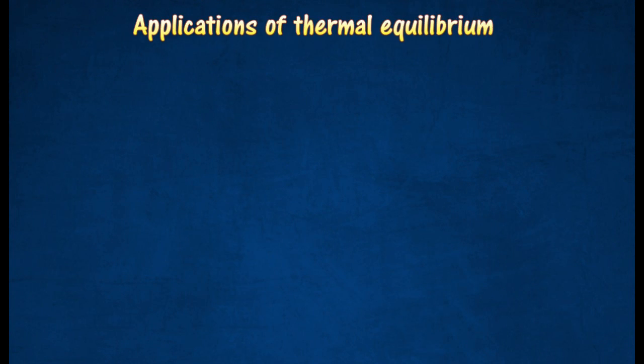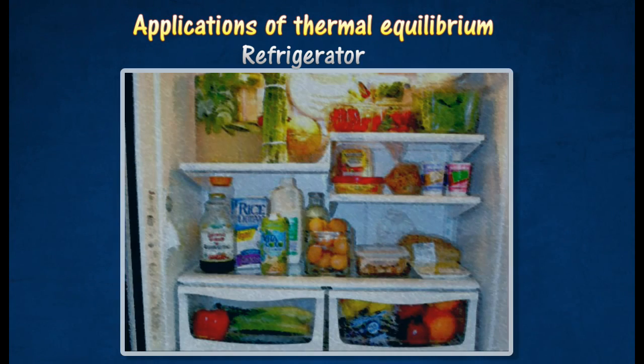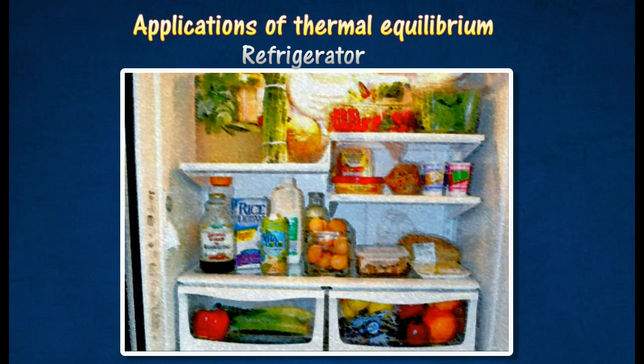Examples of objects in thermal equilibrium: Food kept in the freezer compartment of a refrigerator will eventually attain the temperature of the freezer and thereby be in thermal equilibrium with the freezer.